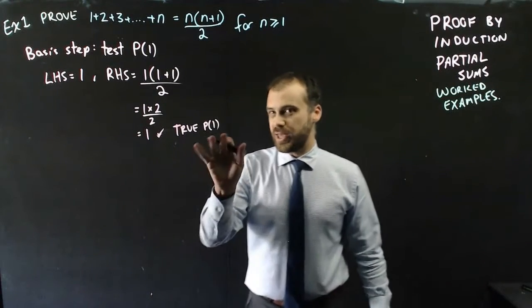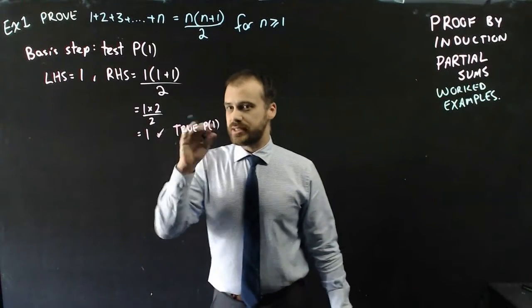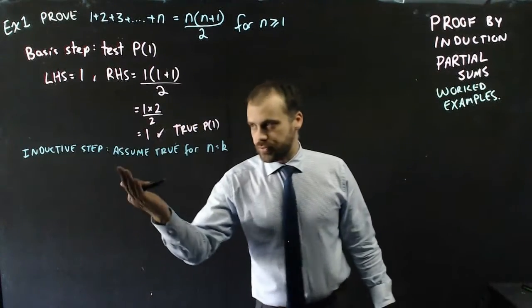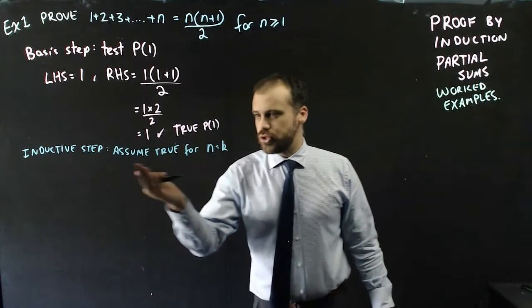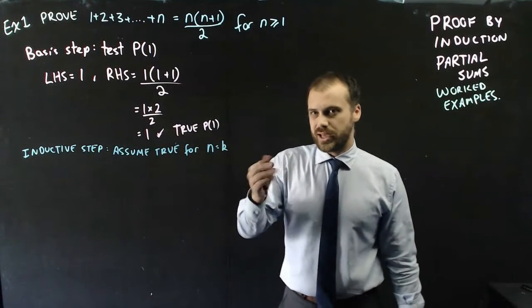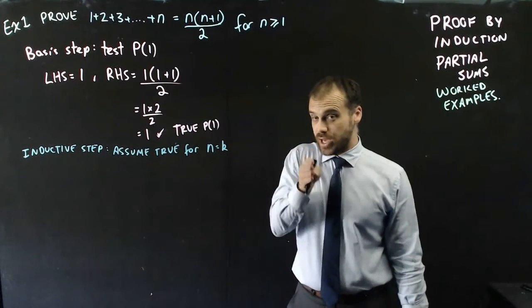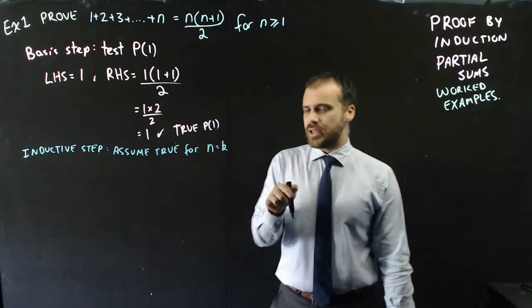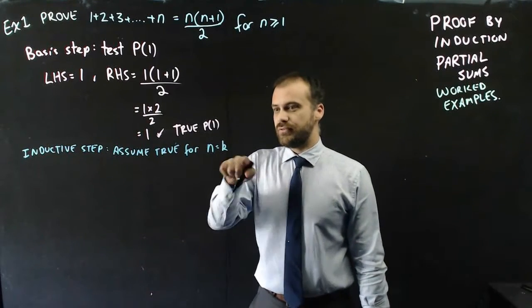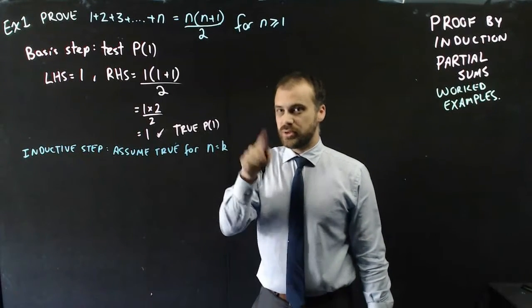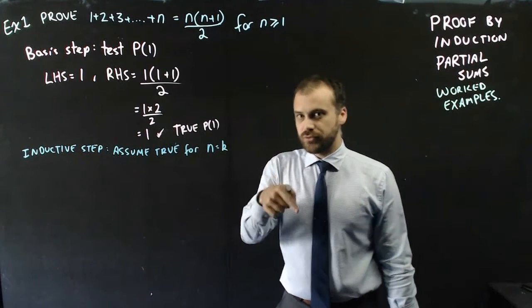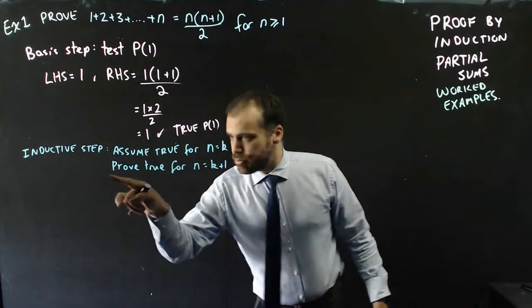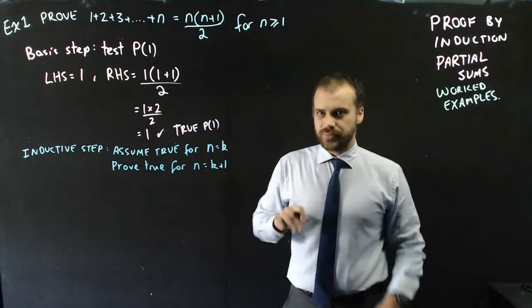Now that we know it's true for P(1), we start the inductive step. We assume it's true for n equals k — there's some k value for which it's true. We assume that, and then we prove that if it's true for k, it would also be true for k+1. Assume true for n equals k; prove true for n equals k+1.